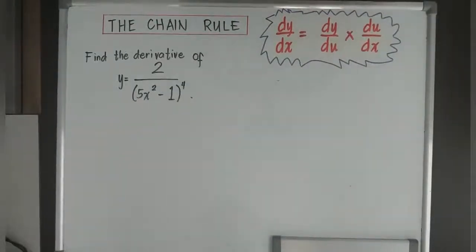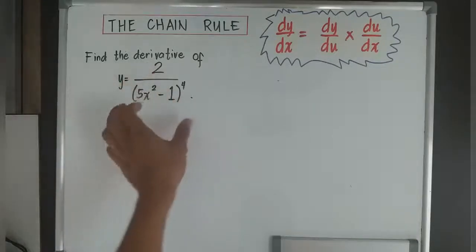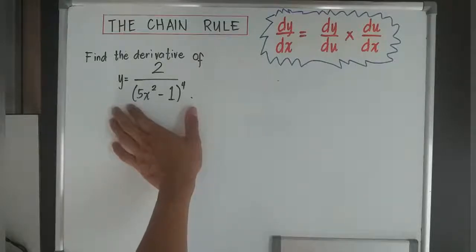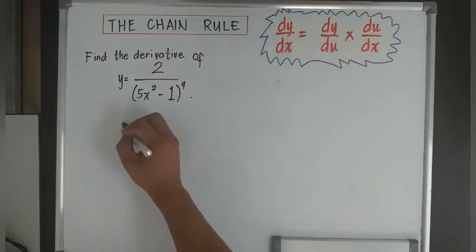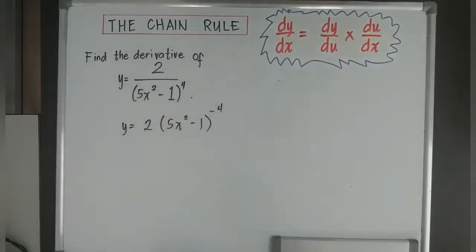The next example is: find the derivative of y is equal to 2 over the quantity of 5x squared minus 1 to the power of 4. We don't have a direct rule for when the denominator is as complex as this. So basically, what you are going to do is apply the law of indices, which says 1 over a to the power of n is equivalent to a to the power of negative n. Thus, this will change into y is equal to 2 times the quantity of 5x squared minus 1 to the power of negative 4.